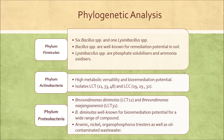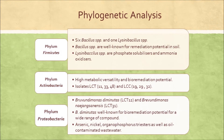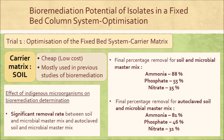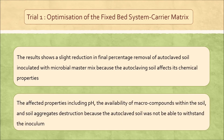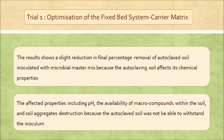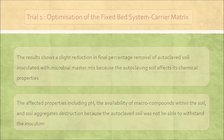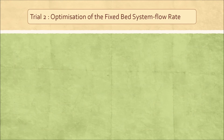The selected isolates were identified as belonging to the phylum Firmicutes, Actinobacteria, and Proteobacteria. Results show a slight reduction in final percentage removal of autoclaved soil inoculated with microbial master mix, because autoclaving the soil affects its chemical properties — specifically pH and the availability of macro compounds within the soil. The second trial is the optimization of the fixed bed system flow rate.